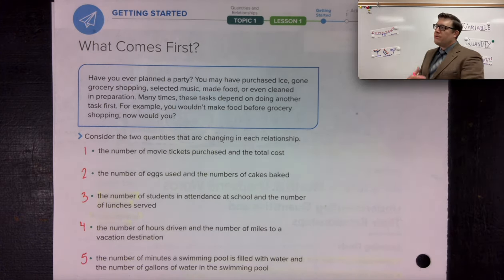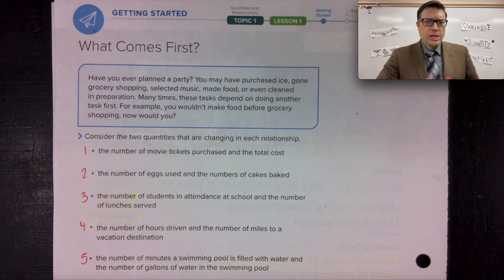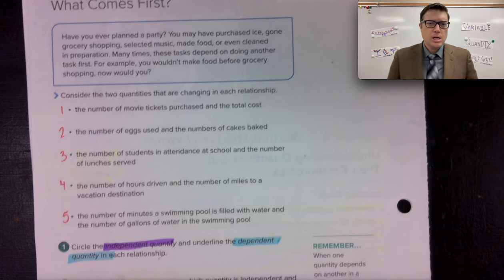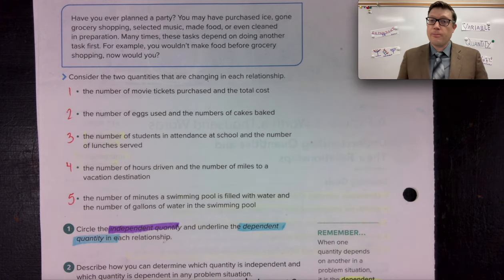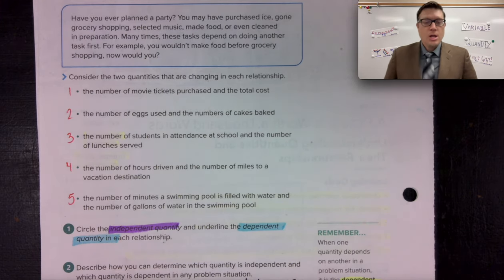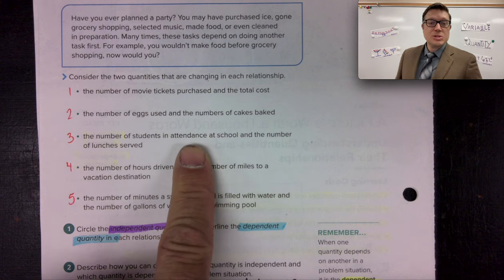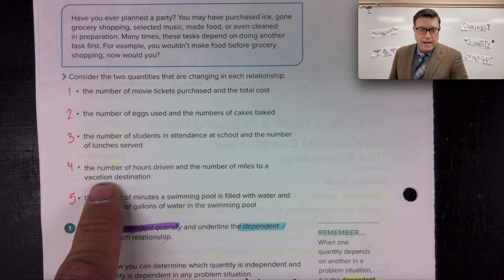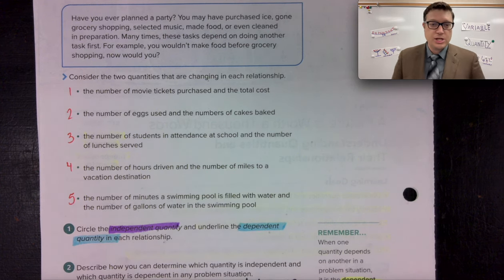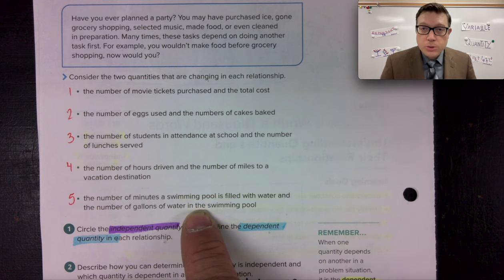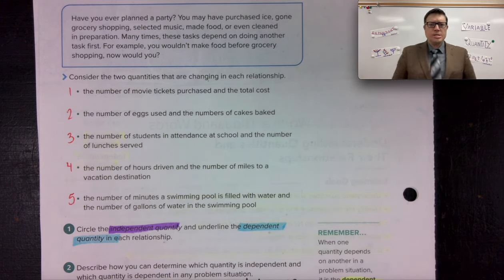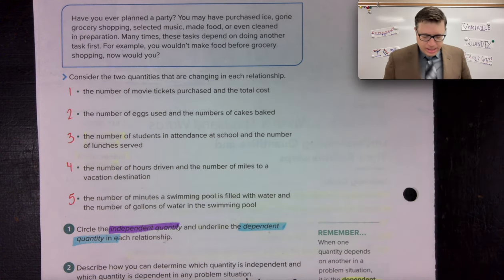Consider the two quantities that are changing in each relationship: the number of movie tickets purchased and the total cost; the number of eggs used and the number of cakes baked; the number of students in attendance at school and the number of lunches served; the number of hours driven and the number of miles to a vacation destination; and the number of minutes a swimming pool is filled with water and the number of gallons in the swimming pool.